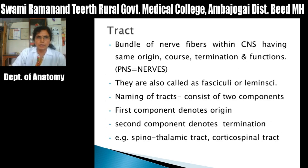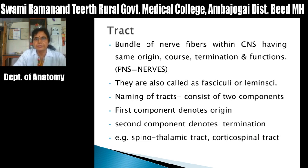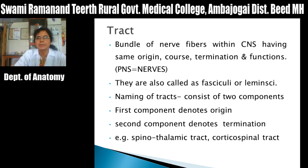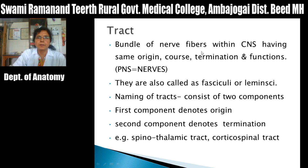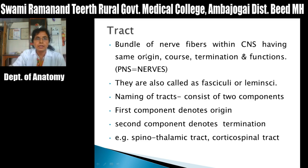A tract is defined as a bundle of nerve fibers within the central nervous system. The nerve fibers present in a tract have the same origin, course, termination, and functions. In the peripheral nervous system, a bundle of nerve fibers is called a nerve, such as ulnar nerve, axillary nerve, or radial nerve. These tracts are sometimes also called fasciculi or lemnisci.